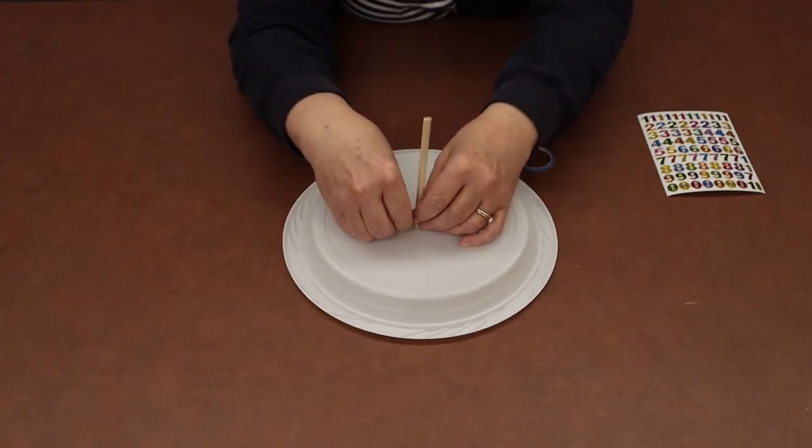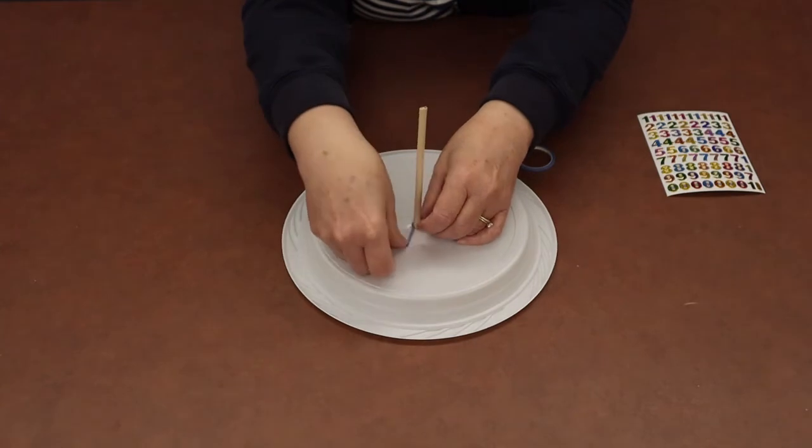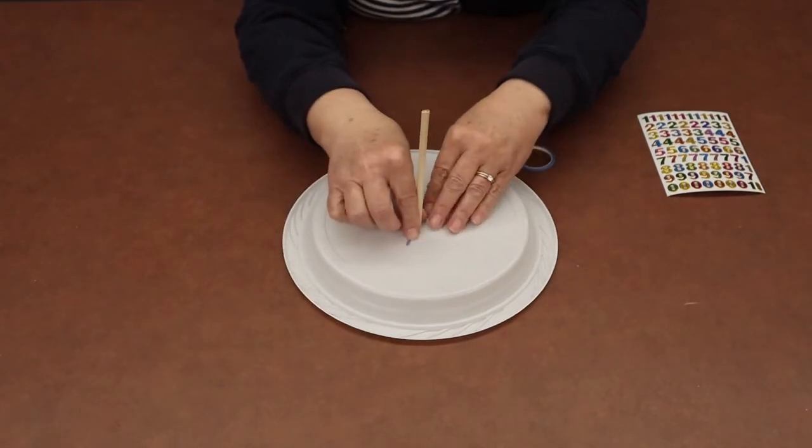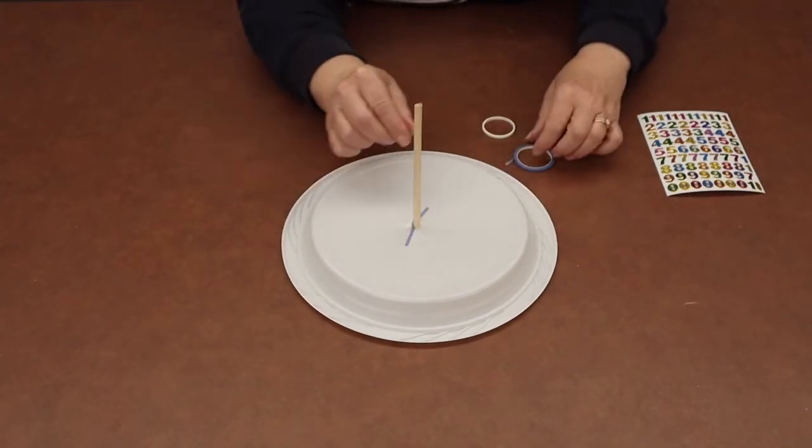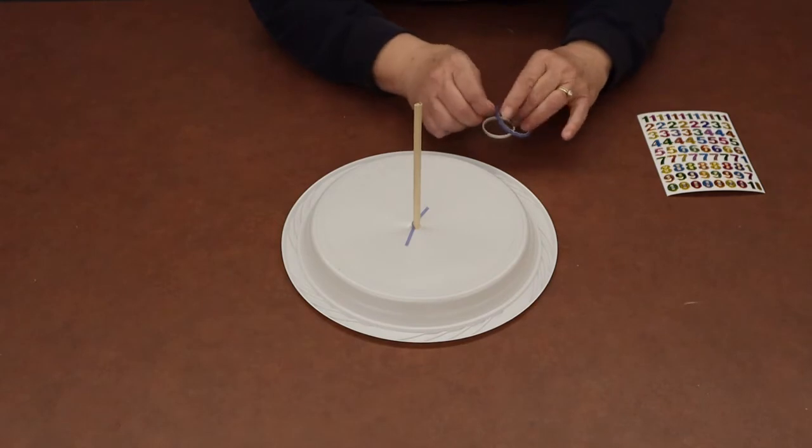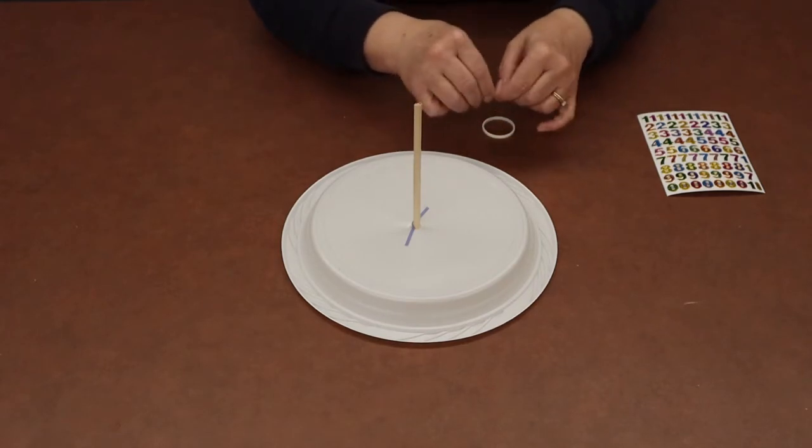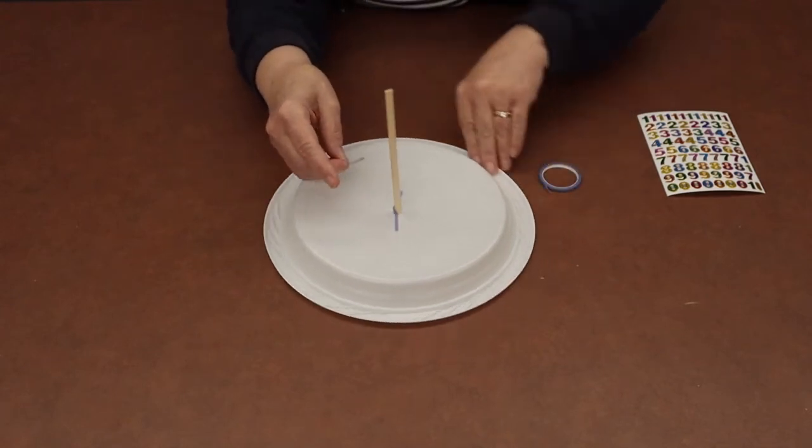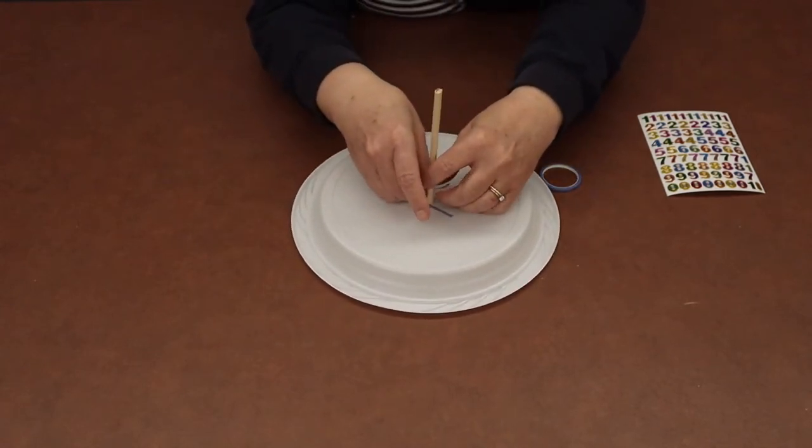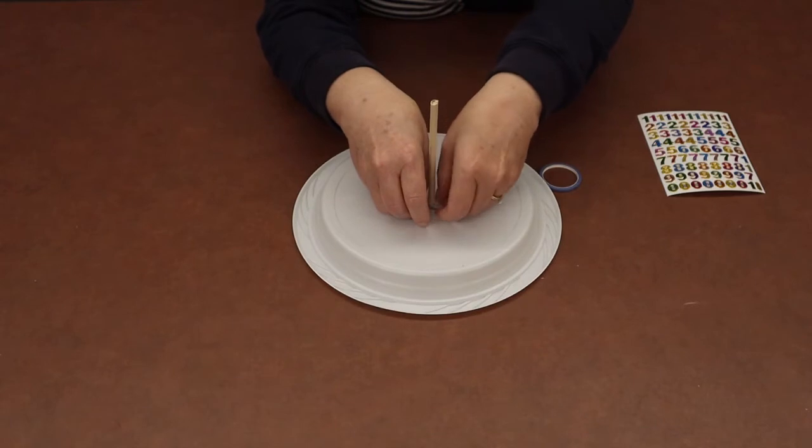And the important thing here is we just want our dowel to be standing up as straight as possible so that when we get outside into the sun, our shadows are straight. So I'll just put a couple more pieces on here so that my dowel is standing up straight.